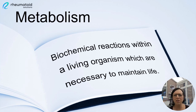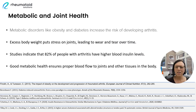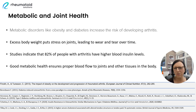Our metabolism can be divided into two distinct categories. One of these is catabolism, which is the breakdown of organic matter into energy. The second category is anabolism, where we build up the components of our cells within our body. When our metabolism is out of balance, this can lead to symptoms such as pain and inflammation in our joints, so taking care of our metabolism is essential for managing arthritis symptoms. Individuals with metabolic disorders such as obesity and diabetes are known to have a significantly increased risk of developing arthritis.